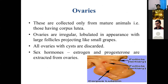Ovaries are collected mainly from mature animals in which oogenesis has already started and which have mature corpus lutea, because hormones like estrogen and progesterone can only be procured from mature animals. These ovaries are irregular and lobulated in appearance with large follicles projected like grapes. If ovaries are found with cysts or disease conditions on post-mortem examination, they must be discarded. The steroid hormones estrogen and progesterone are the two main hormones obtained from ovaries.